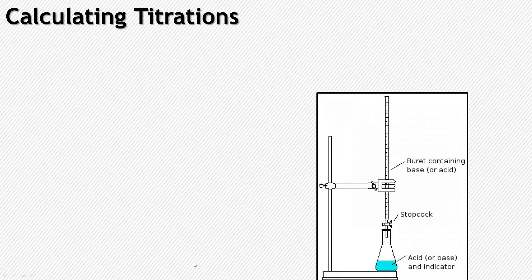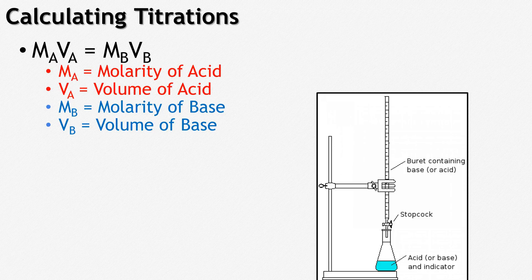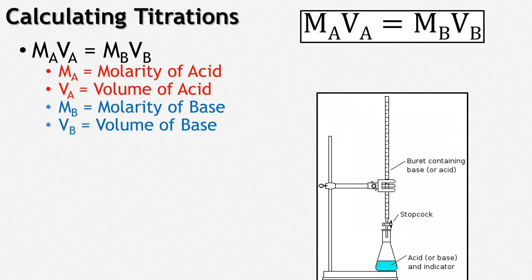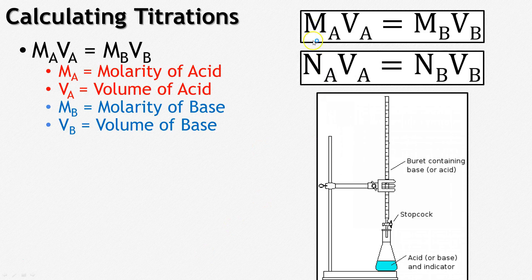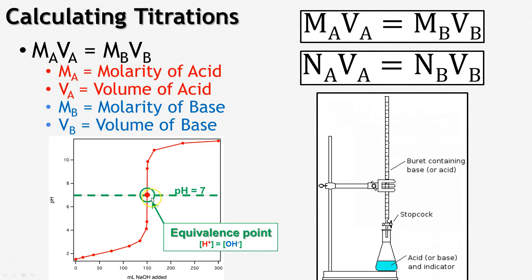To actually calculate titrations, use this simple equation: MA × VA = MB × VB, where MA is molarity of acid, VA is volume of acid, MB is molarity of base, and VB is volume of base. If you're working with normality, just substitute normality for molarity — same idea. This is how you calculate the unknown concentration from the known. The volume it takes to reach the equivalence point gives you your unknown concentration.